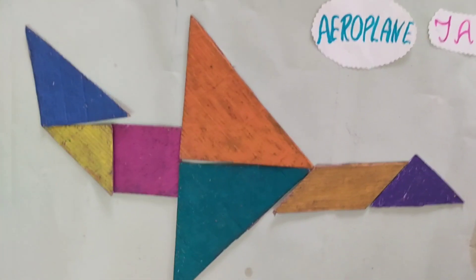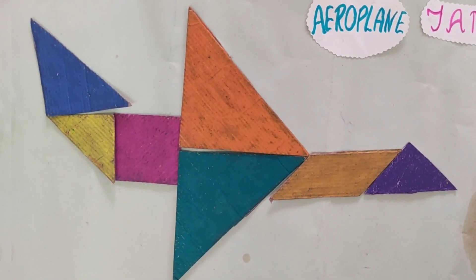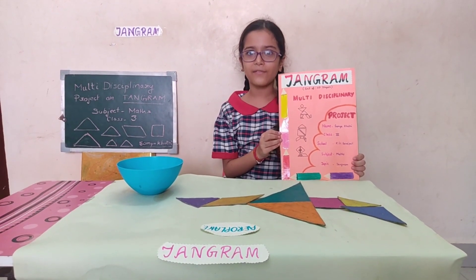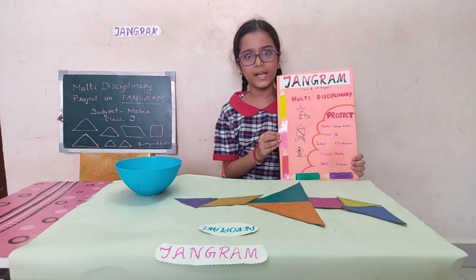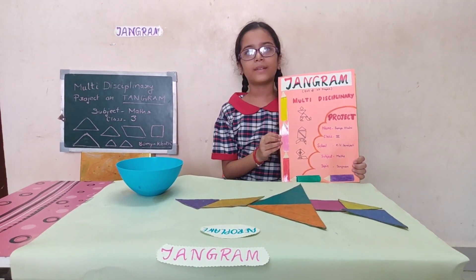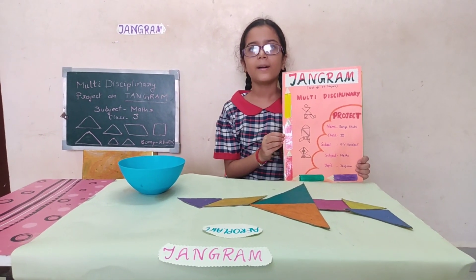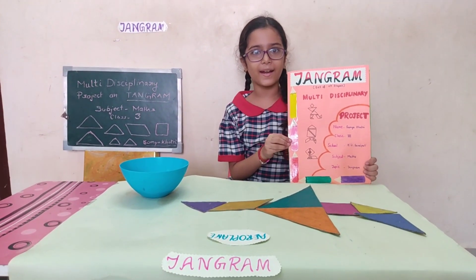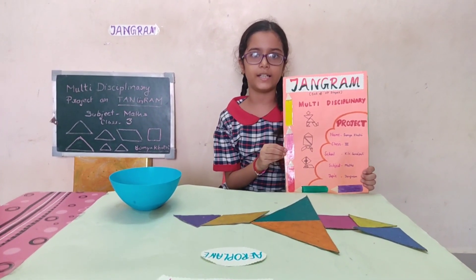The airplane is ready to fly in the sky. I have used 7 shape tangram to make an airplane, a man, a kite, and a rocket.